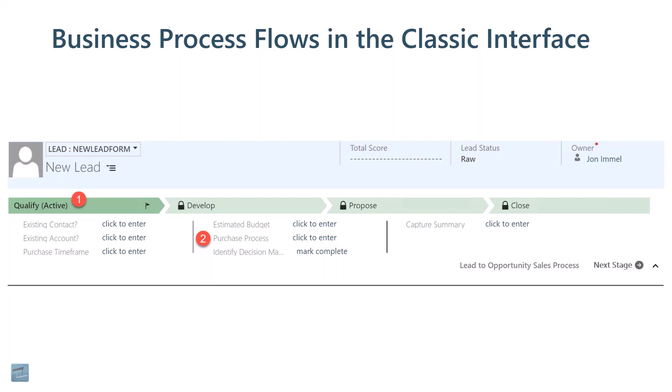One point of confusion is that the second column of three steps is often confused as being for the develop stage, and that capture summary — that last step — is often confused for being either part of propose or close. So that is one part of business process flows that has been changed in the unified interface.